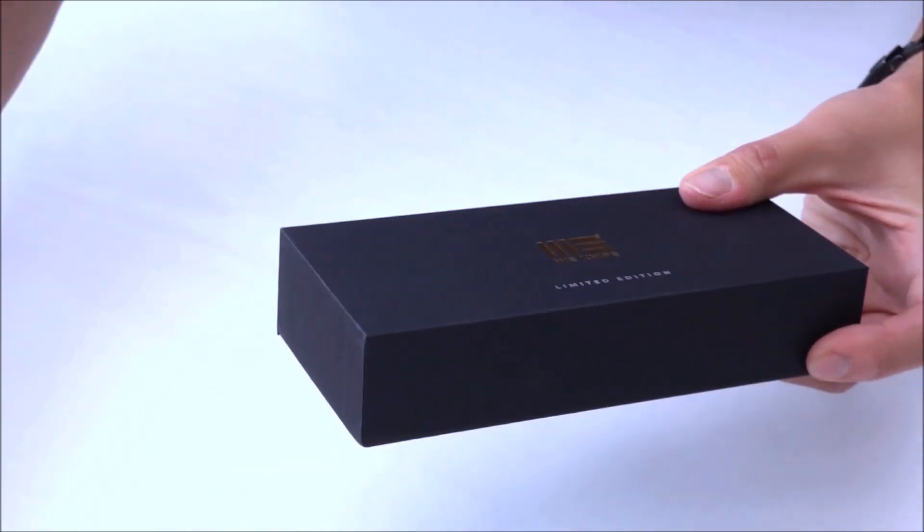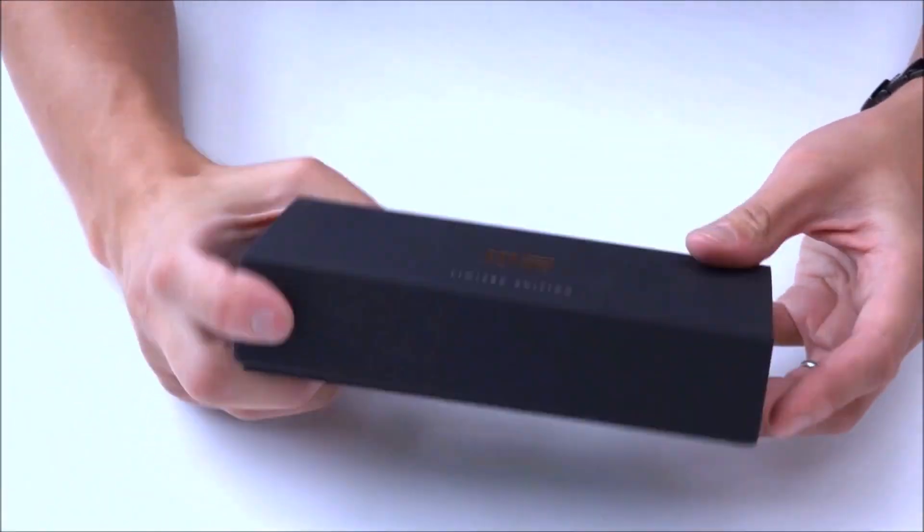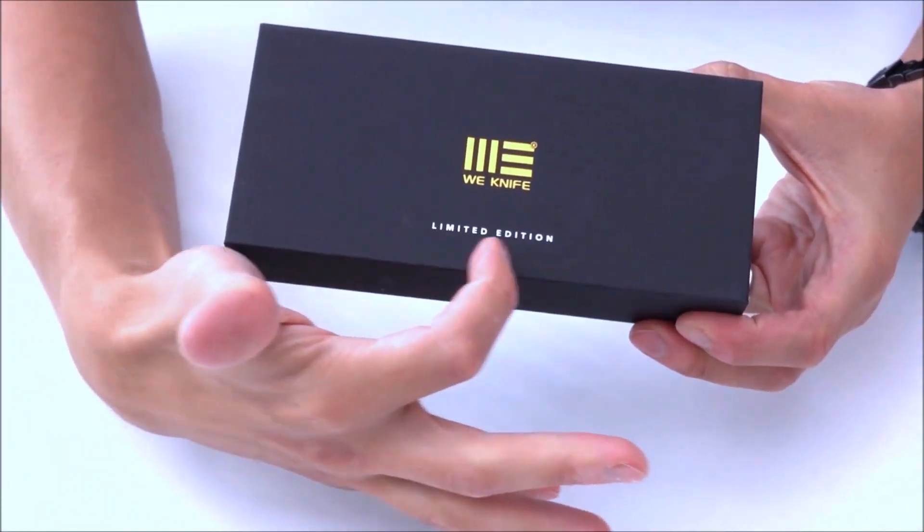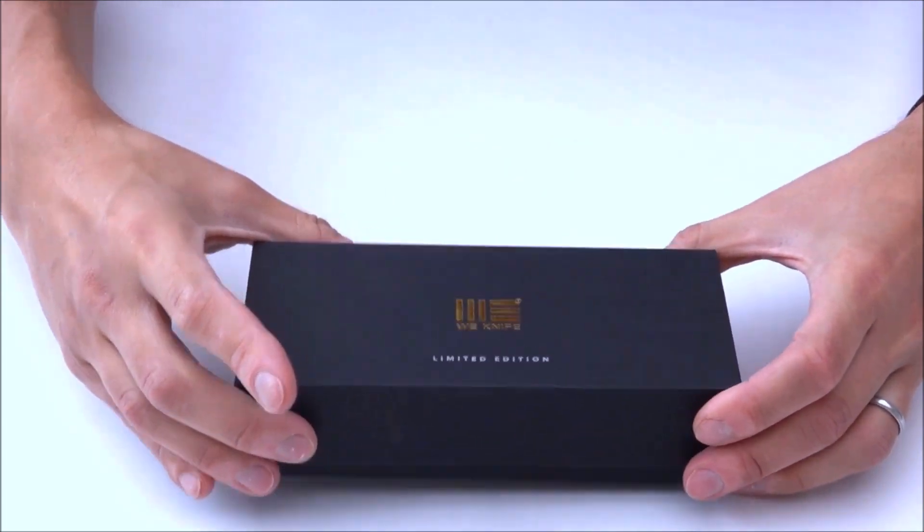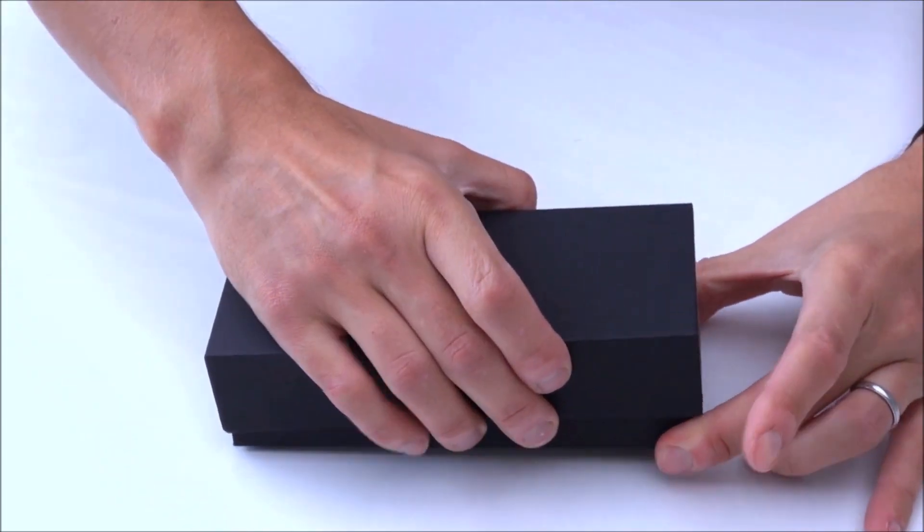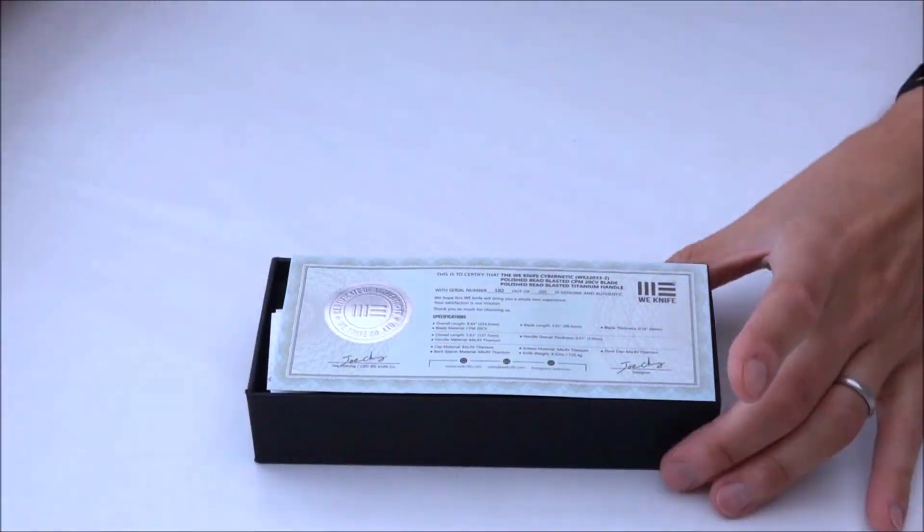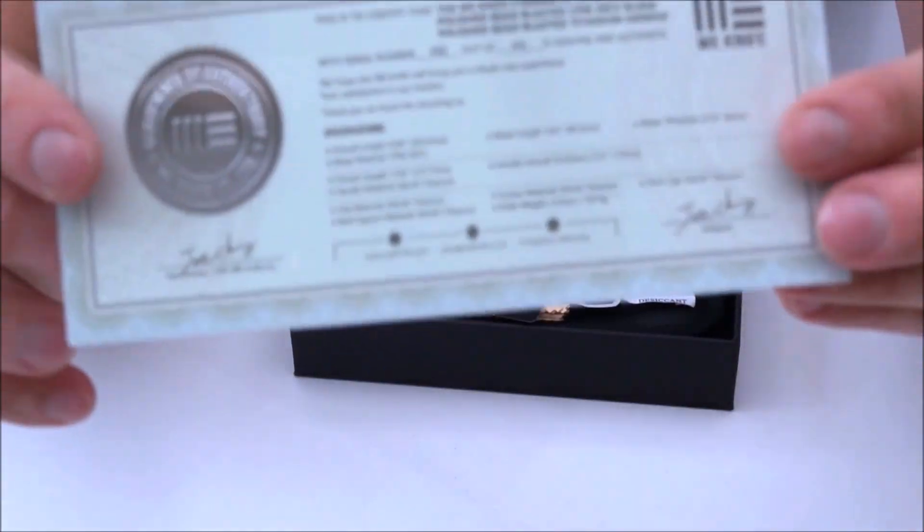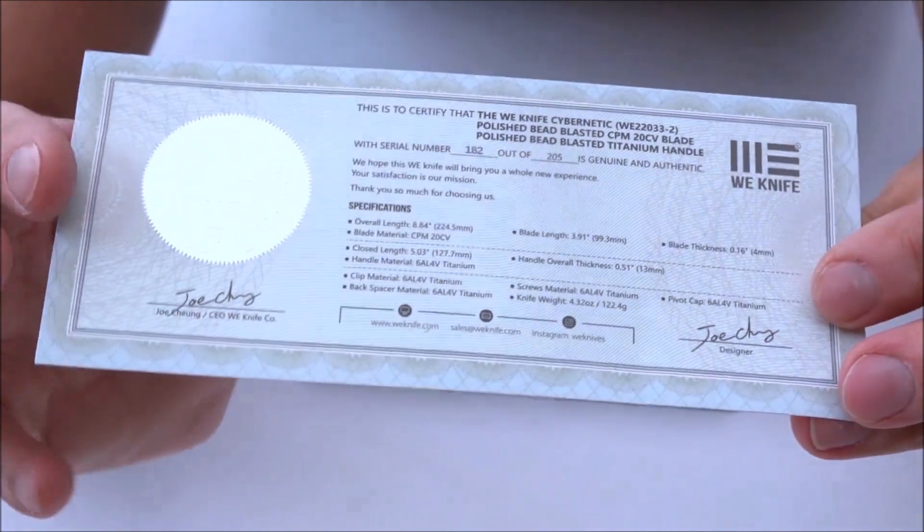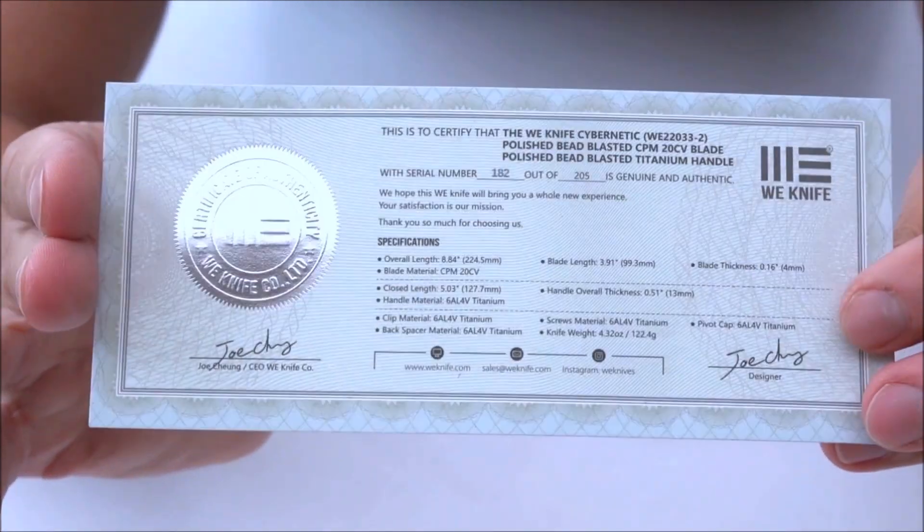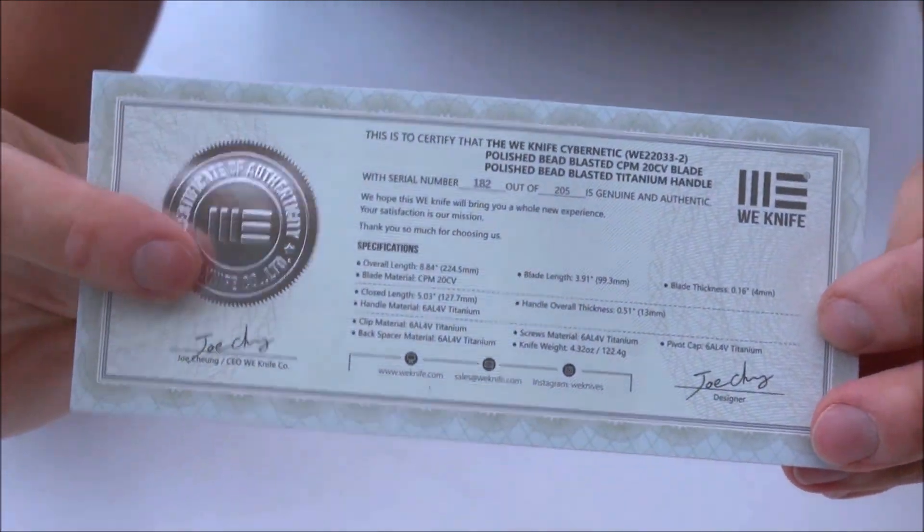So the typical box here for the limited run with the circle here stating limited edition on top. We're going to remove this part. And we have your typical box, limited edition text down there. Let's see if we can get it opened.